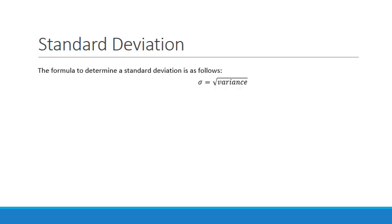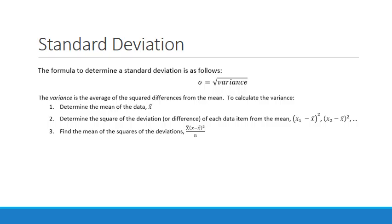Now, the formula to determine a standard deviation is as follows. Remember, this is our standard deviation symbol, is equal to the square root of the variance. The variance is the average of the squared differences from the mean. So the average of the squared differences from the mean simply mean that we have to find the difference between a data value and the mean, find the difference and square it, and you do that with all the data values. And then you find the average of that.